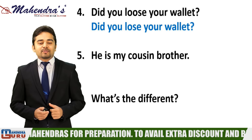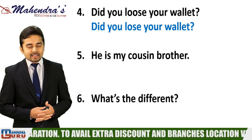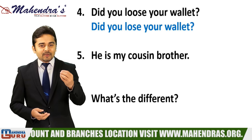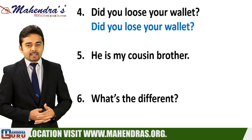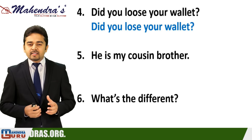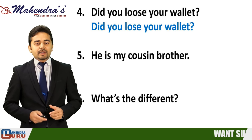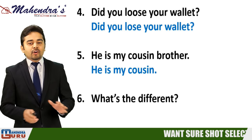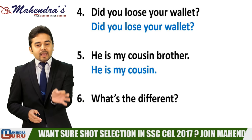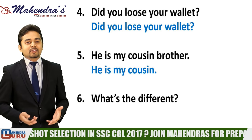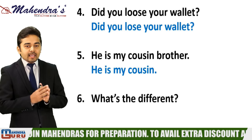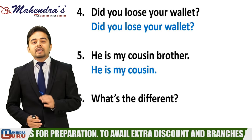Fifth sentence: 'He is my cousin brother.' The problem is the word 'brother.' You cannot use 'brother' with 'cousin' because 'cousin' already means a male or female cousin. Using 'cousin brother' is superfluous. The correct sentence is simply 'he is my cousin' — no need to add 'brother.'